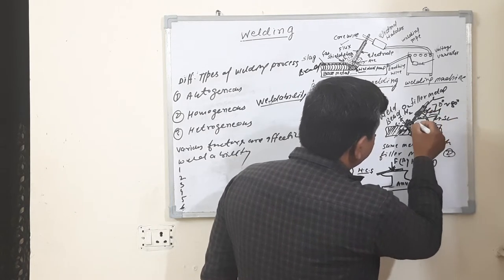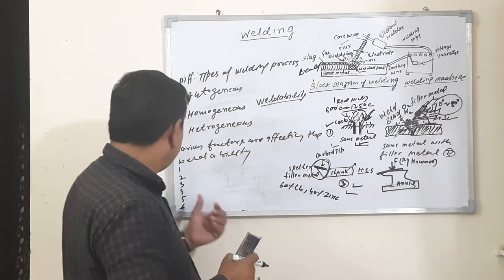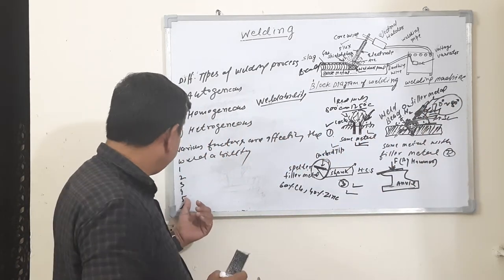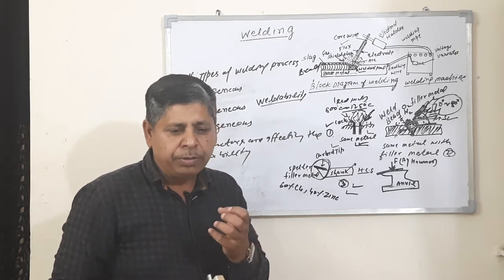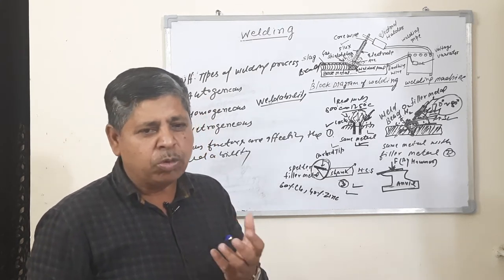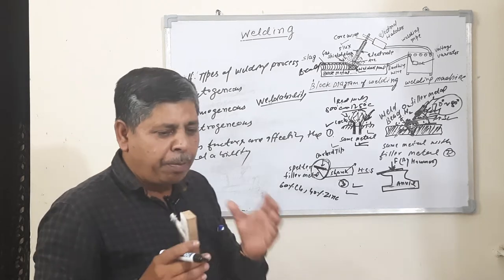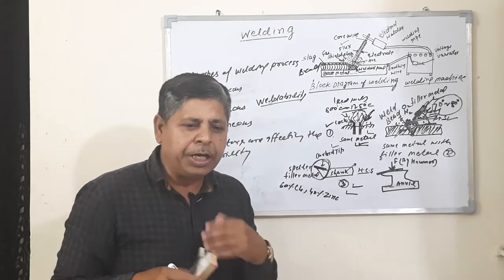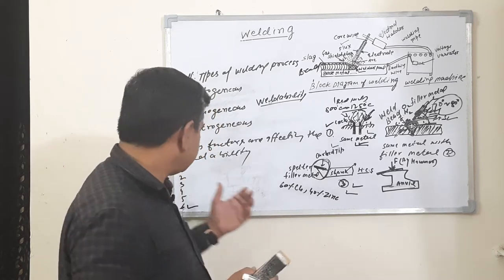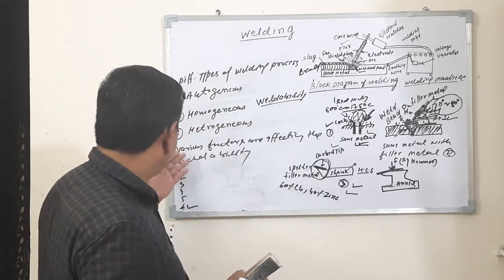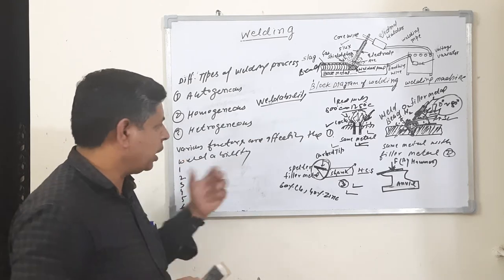Number five is good quality of the flux and good quality of the filler metal. Number six is the proper heat treatment of the welding, both before and after. These are the various factors affecting the weldability of the metal.